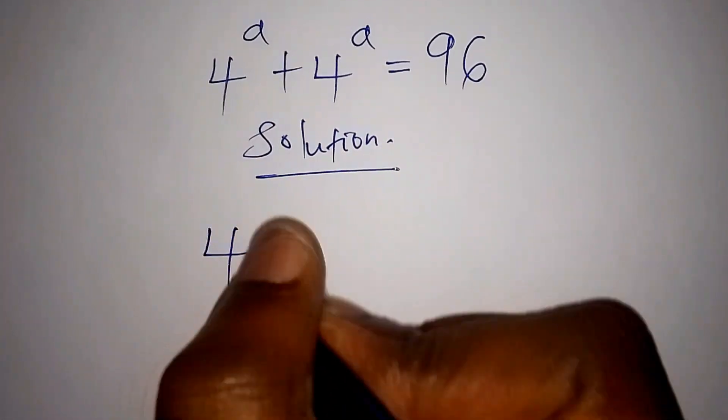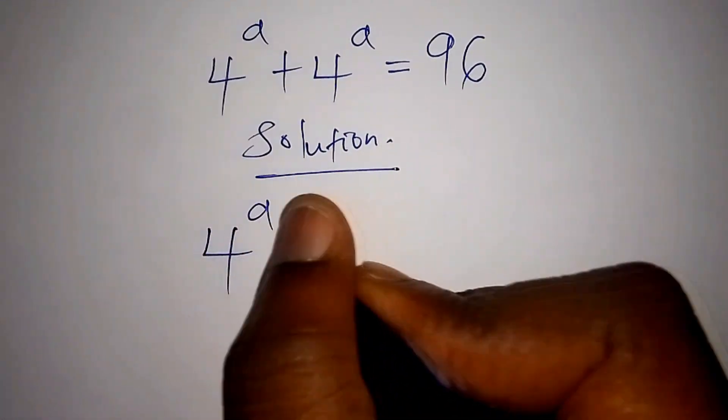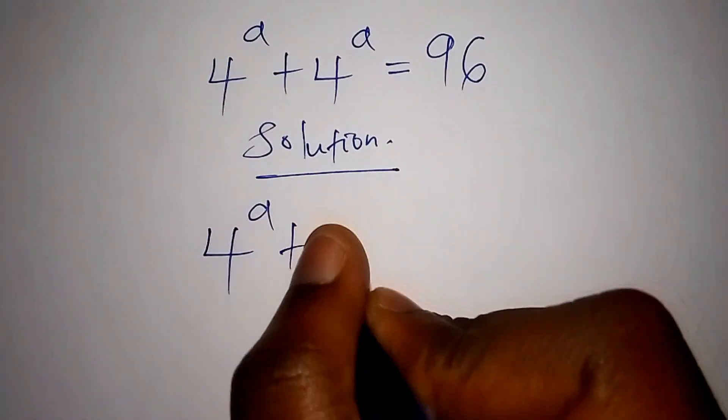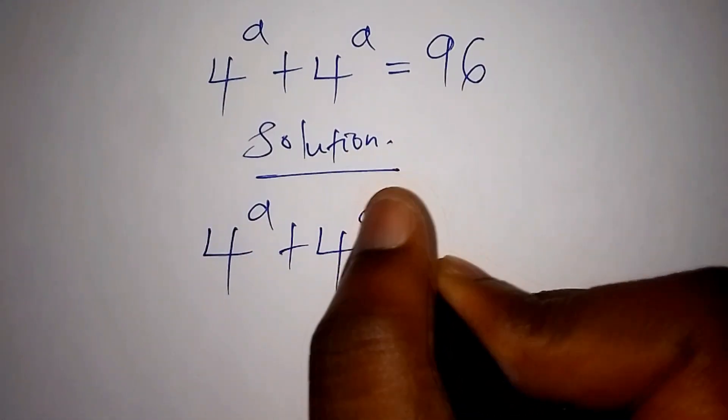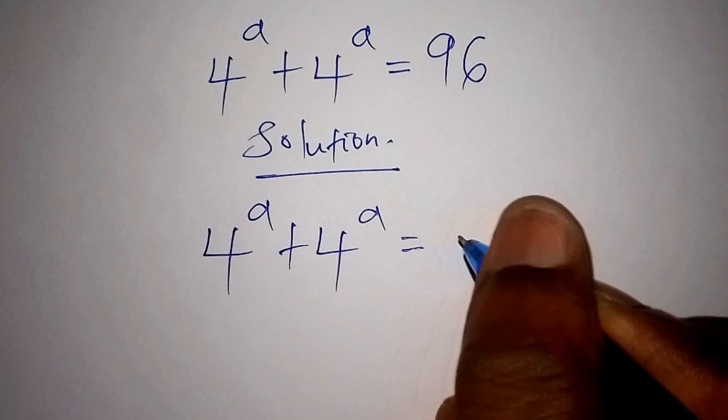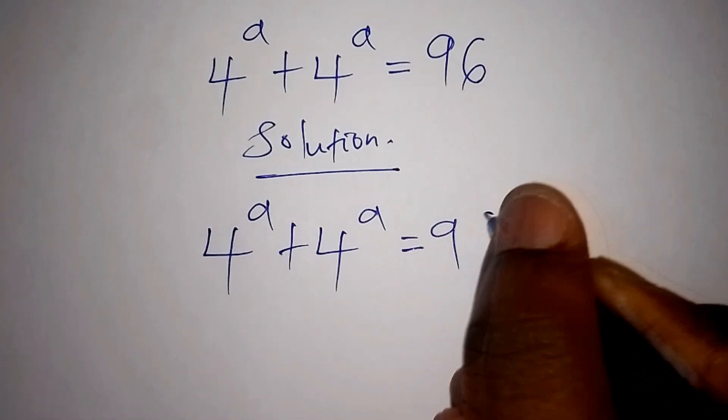We have 4 to the power of a, plus 4 to the power of a, is equals to 96.